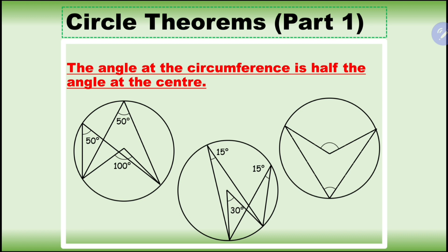Another example: if the angle at the center is 130, the angle at the circumference is going to be half of that, which is 65. It could go the opposite way as well — the remaining angle left is 230, which is the outer angle. If the angle was drawn on the opposite side, then it's going to be half of 230, which is 115 degrees.